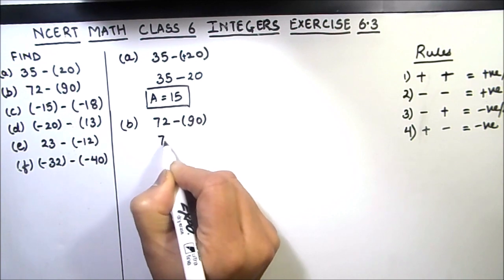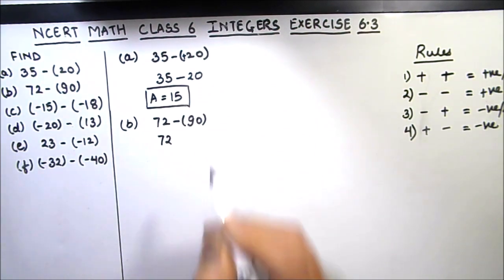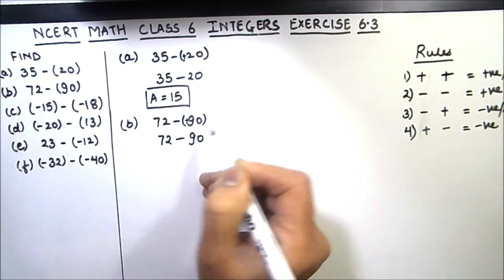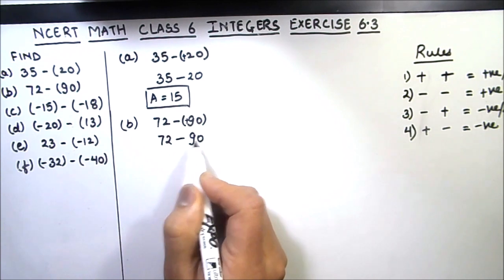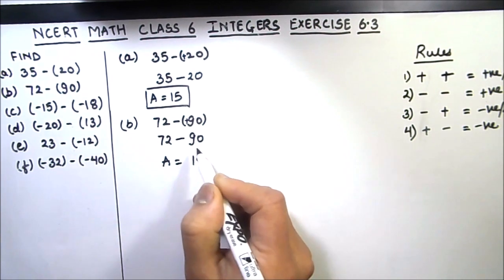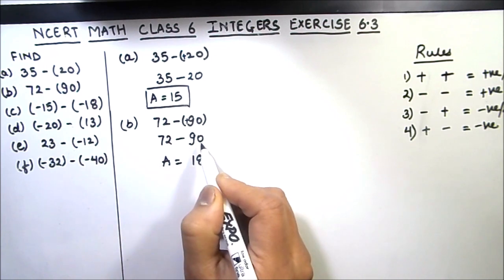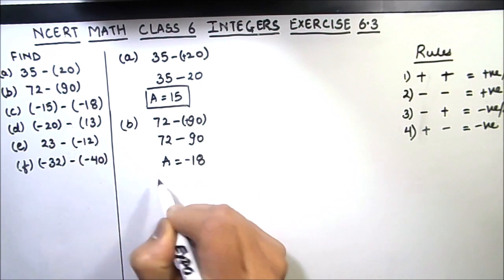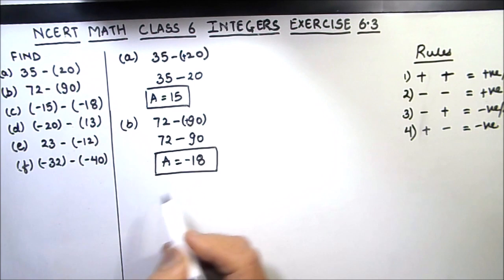Part b is 72 minus (-90). We write 72 as is. Minus and plus gives minus, so this becomes minus 90. Plus and minus are different signs, meaning subtraction. We do 90 minus 72, which is 18. The sign is always of the bigger number — here the bigger number is 90 and its sign is negative, so our final answer is minus 18.